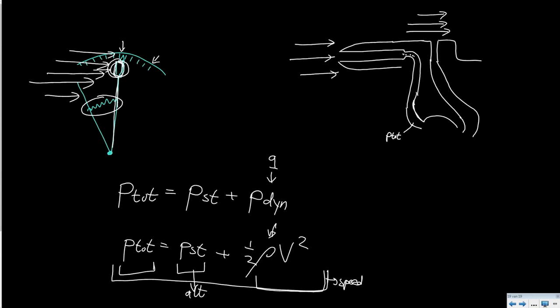So what the speed meter does is basically it measures the difference between the total pressure and the static pressure. And this way you get an indication for the dynamic pressure.